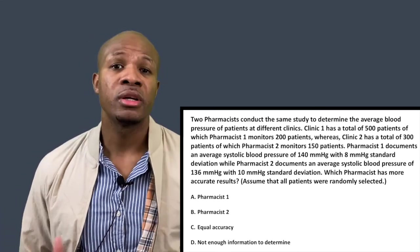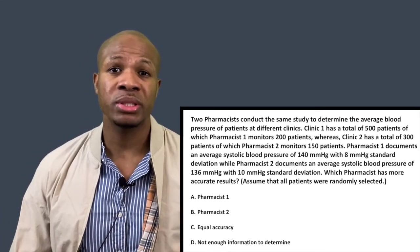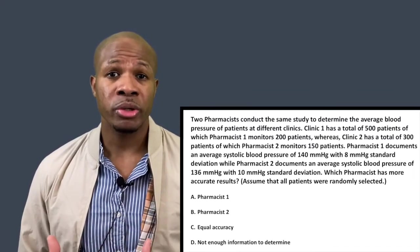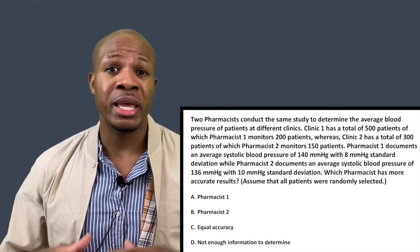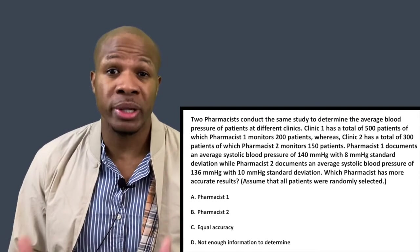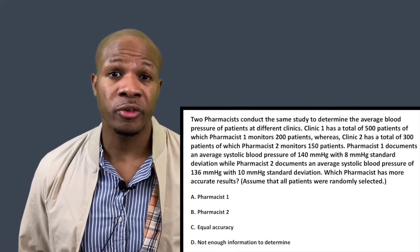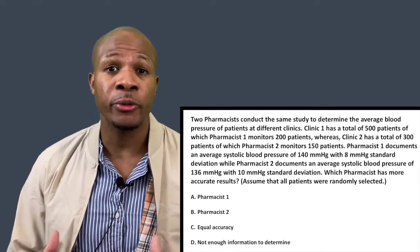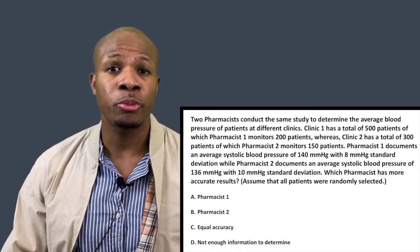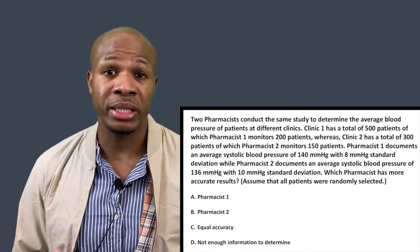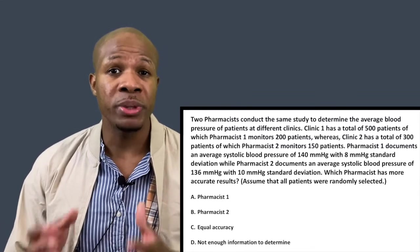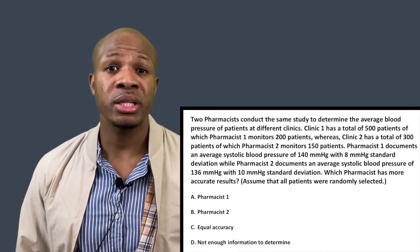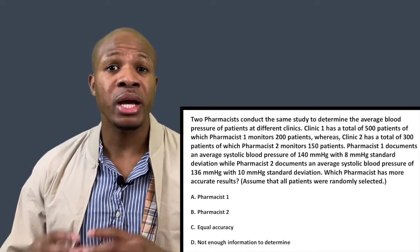Which pharmacist has more accurate results? Assume that all patients were randomly selected. To be accurate means to get an answer that is close to the real answer. If both pharmacists wanted to get the most accurate answer, they would measure the blood pressure of every patient in the clinic — that average value would be the true average for that clinic.